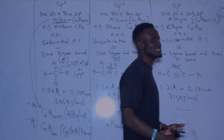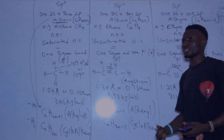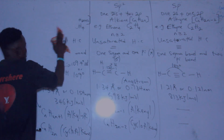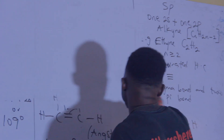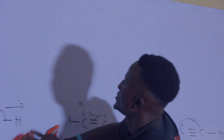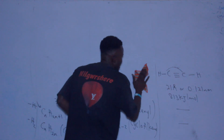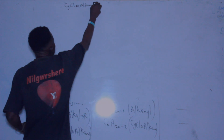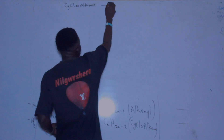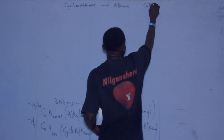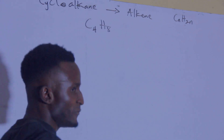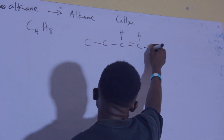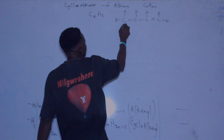Let me differentiate between cycloalkane and alkene. Cycloalkane and alkene have the same general formula CₙH₂ₙ. For example, take C₄H₈: if it has a double bond, we call it butene. But if it is in the form of a cyclic structure with four carbons and no double bond, each carbon must not have more than four bonds.